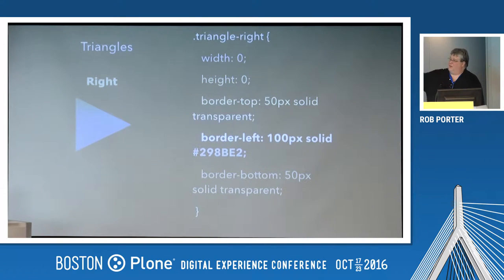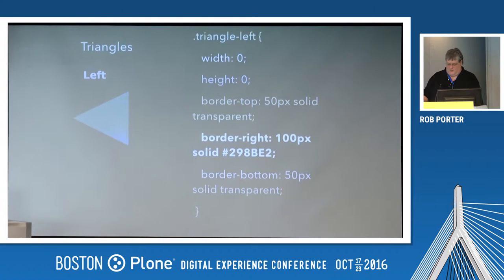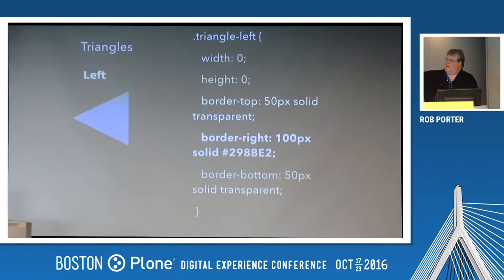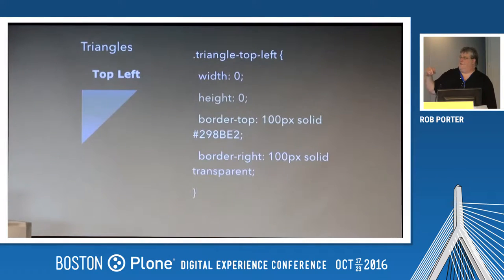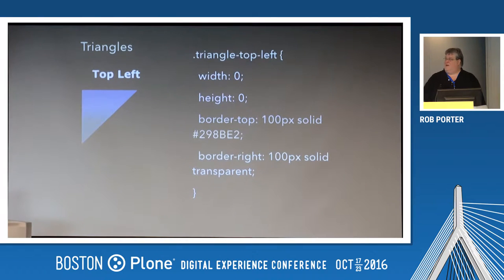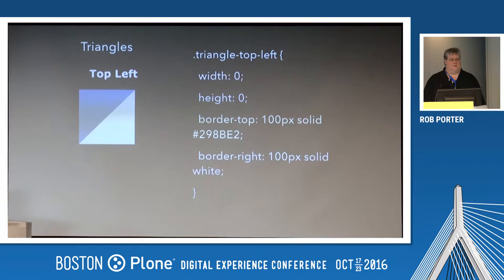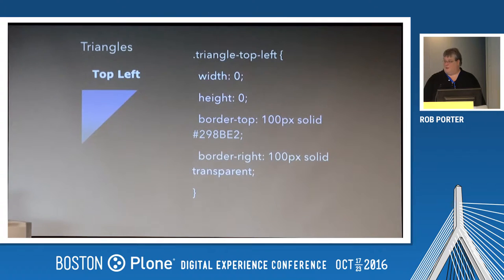For the triangle left, the border right has the color going towards the left, and then the top and bottom are transparent. So what happens if you want to have a triangle that's on the top left? If both of these would have colors it would look like that, but you're making the bottom one transparent. And since it's coming top to bottom, that's the way it looks.